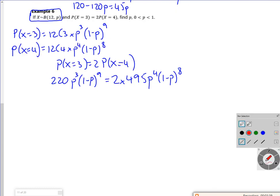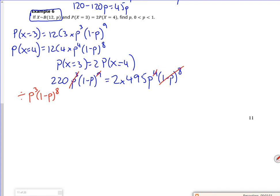We can divide by, so same idea. So I can divide through by P cubed of 1 minus P to the 8. So that goes, that goes, that goes, all that goes. So I've got 220, 1 minus P, and then 990 P.